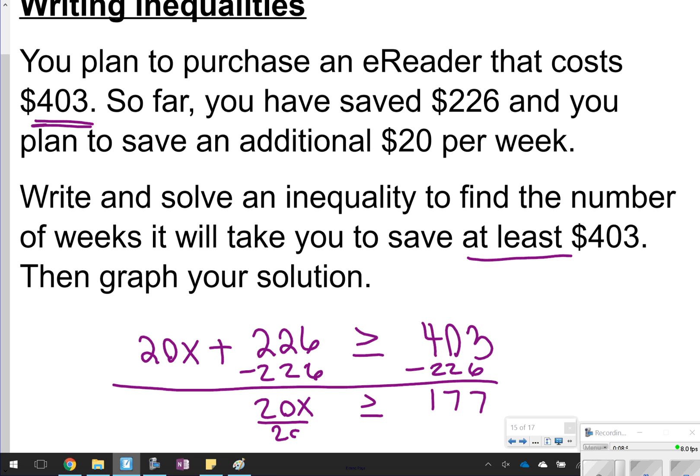177 is greater than or equal to 20x. I probably will get a decimal here after I divide. So when I have 177 divided by 20, I'm going to get, what is that, 8 times? 160, I get 17 left over. It says write and solve an inequality to find the number of weeks. So it's going to take me approximately, x will be greater than or equal to 8.85.